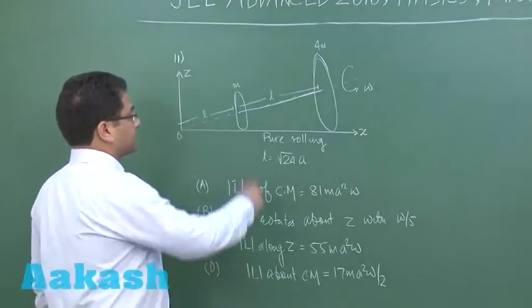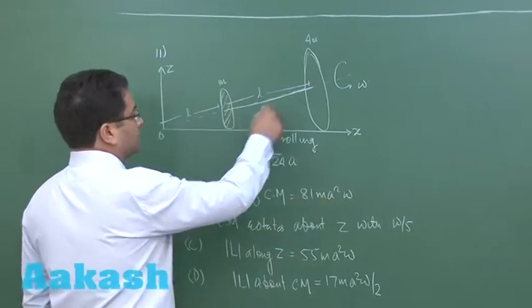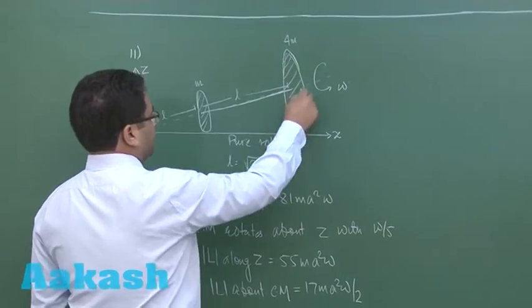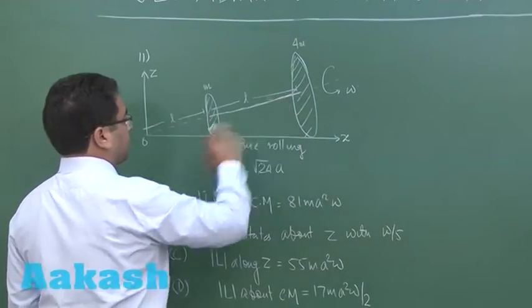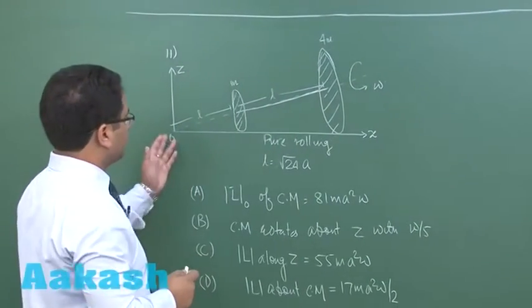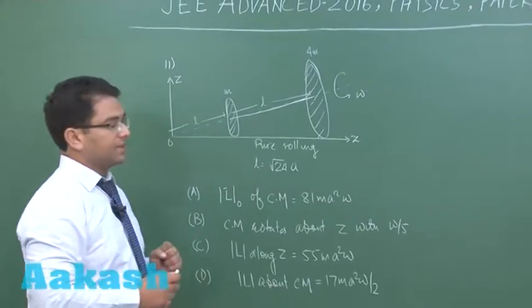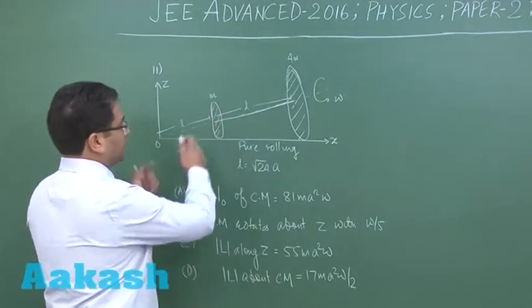The question is something like this: there are two disks connected by a massless rod of length L, and even this part is of length L, this particular part.